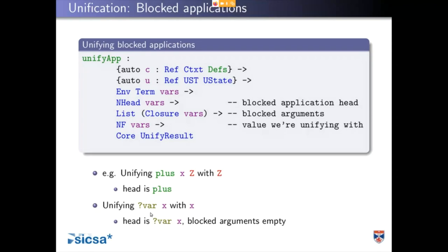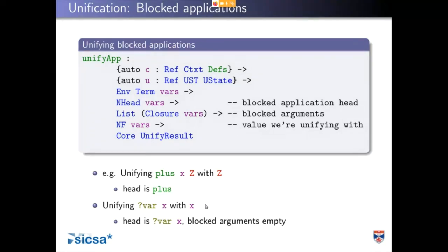At this point we could solve: if we've got query var x being unified with x, we can solve var with lambda x dot x and then make further progress. Unifying query var x with y would not be successful because we have a local variable that's not in scope. What we typically do there is postpone because it might be that further progress would normalize the thing to something that doesn't use the variable, or otherwise we give up.